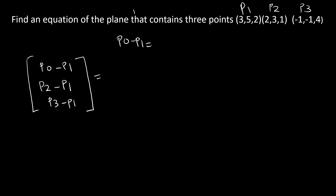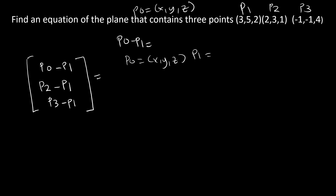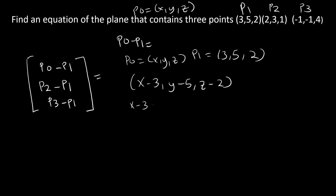Let's do P0 minus P1 first. P0 is not given, so we assume it's x, y, z — three coordinates. So P0 is x, y, z and P1 is 3, 5, 2. P0 minus P1 gives us x minus 3, y minus 5, z minus 2, which can also be written as (x−3)i + (y−5)j + (z−2)k.